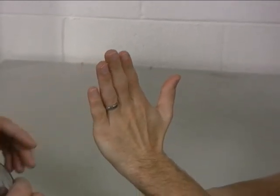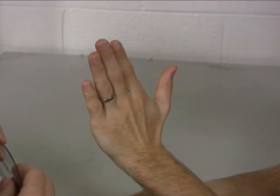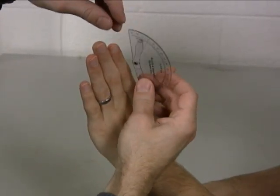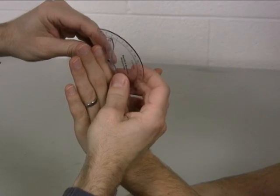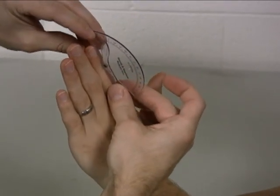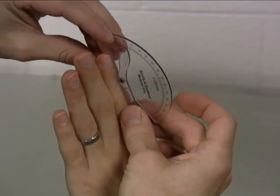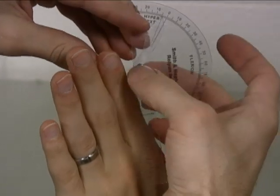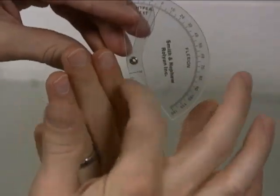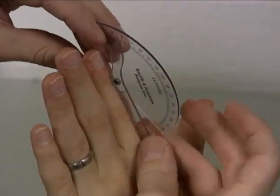To measure finger distal interphalangeal joint active range of motion, you're going to take your goniometer, again, place it on its edge on the back of the finger, and with the axis of the goniometer centered over the distal interphalangeal joint.